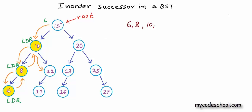So far we have visited 3 nodes: first node with value 6, then node with value 8, then 10. So 8 is successor of 6, and 10 is successor of 8. Now let's see what will be the successor of 10. For nodes 6 and 8, there was nothing in right. But for a node, if there is something in right — that is, a right subtree — then its successor would definitely be in its right subtree. So we go to node 12, then go left to node 11, which is a leaf node. There is nothing in left, so we visit 11. Inorder successor of 10 is 11.